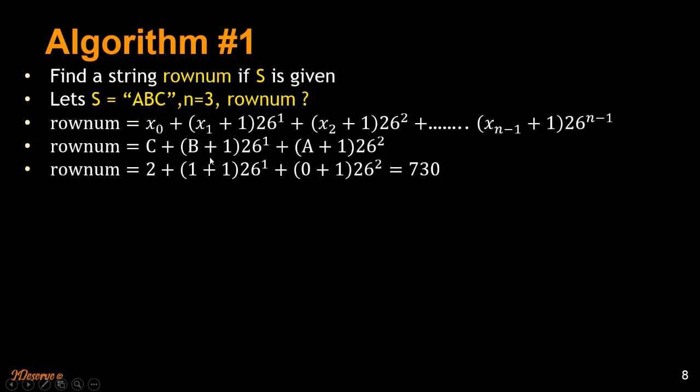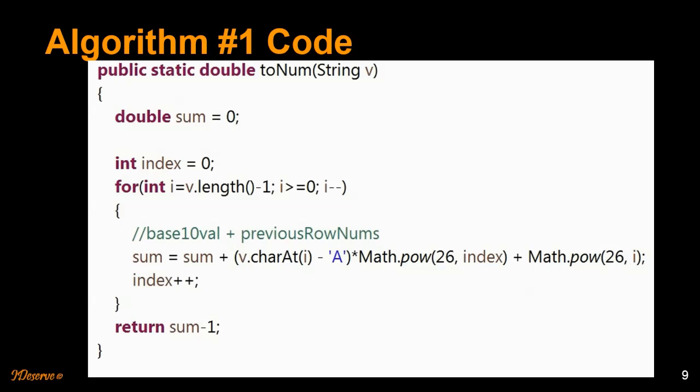And finally, what we get? We get 2 plus 1 plus 1 and so on and we get the value 730. Let's go ahead and look at the code for this quickly. The code is exactly like the formula. You can just go through it. If you have any doubts, leave your comments.